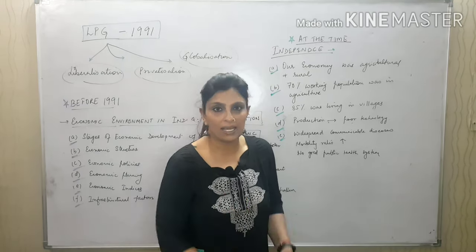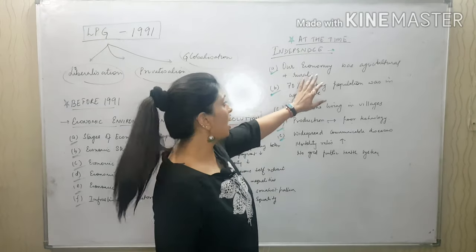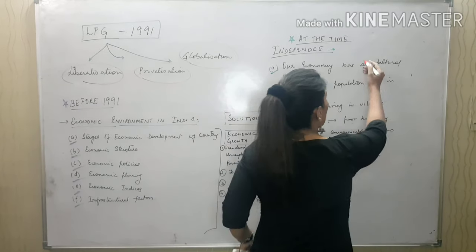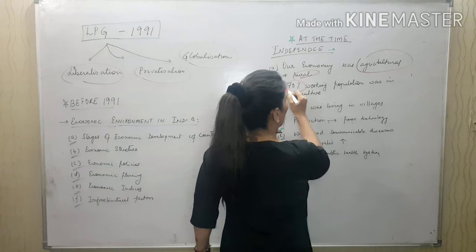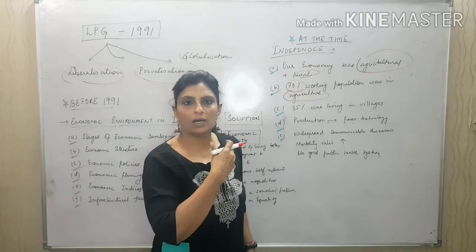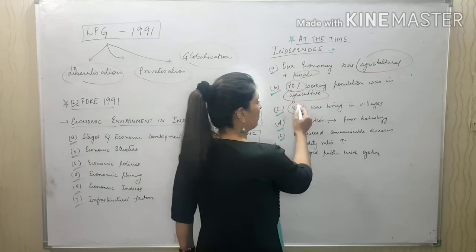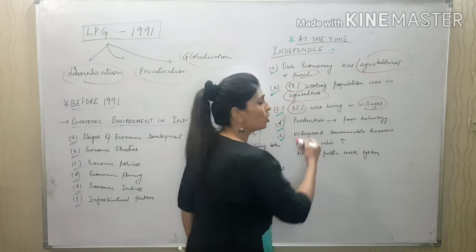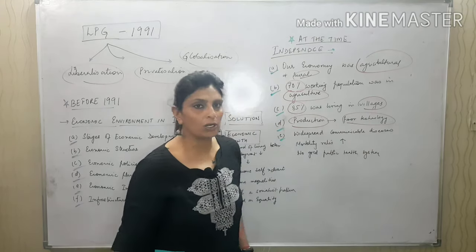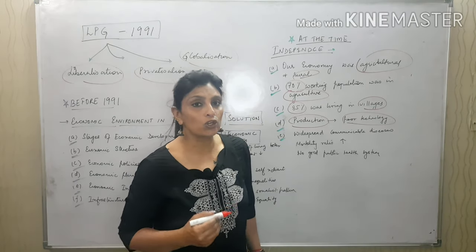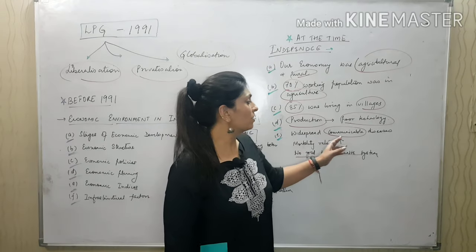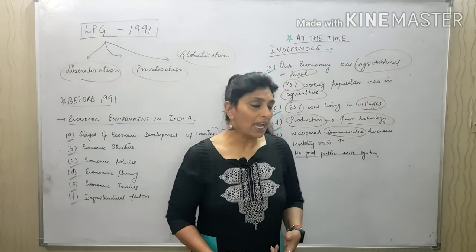Let's recapitulate what was happening in India at the time of independence. Our economy was totally agricultural and rural — approximately 70% of the people were working in agriculture, dealing mainly with irrigation and related facilities, and 85% were living in villages. When we talk about production capacity, we were using poor, depleted technology and did not have the latest technology, which was a major drawback.